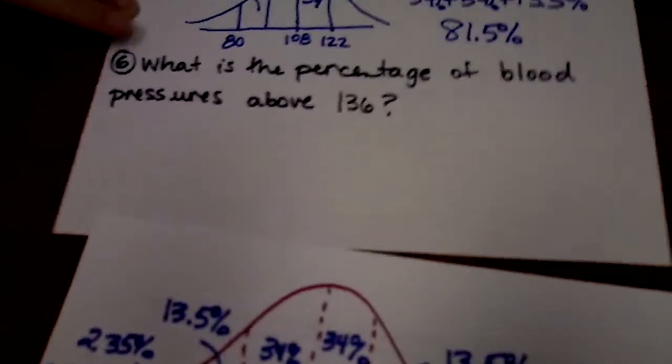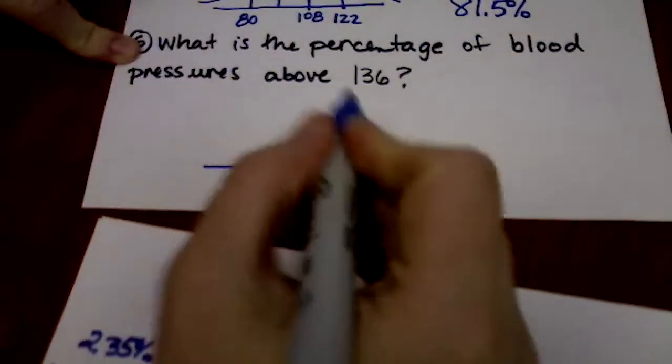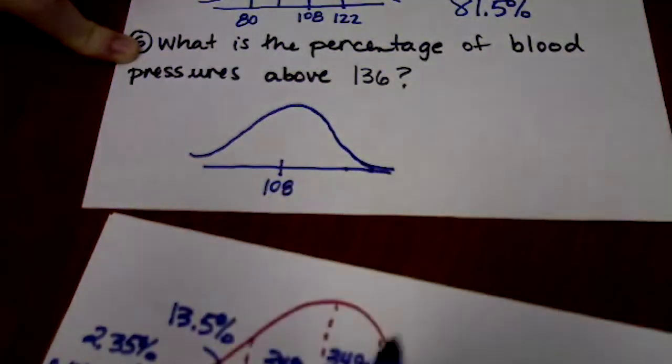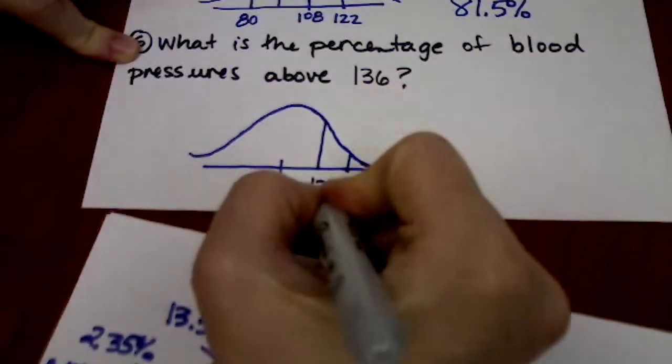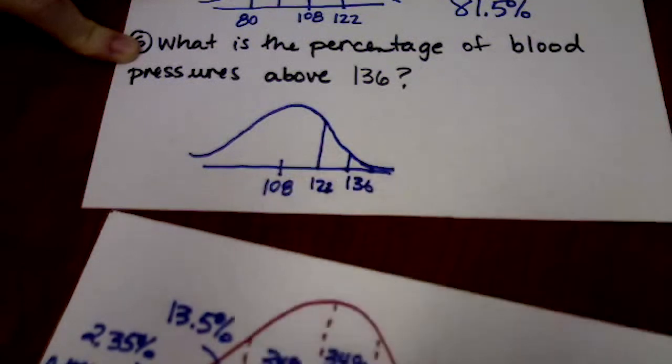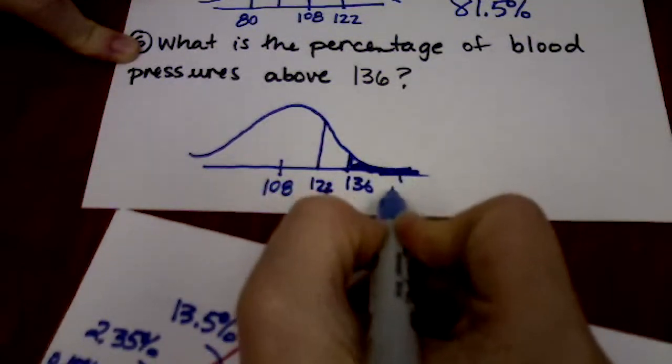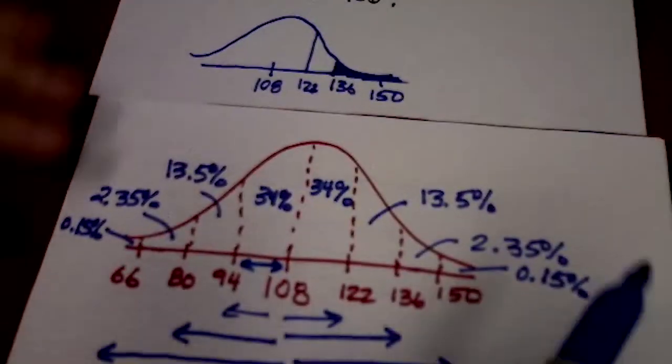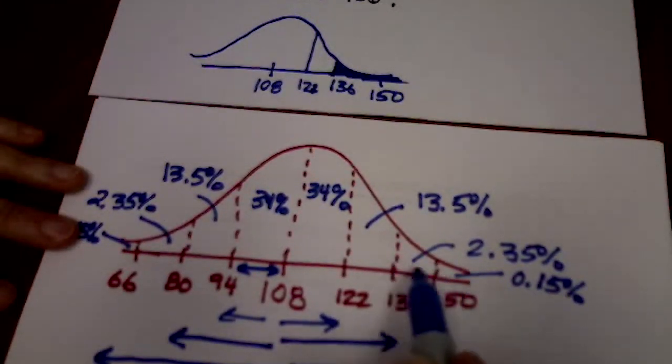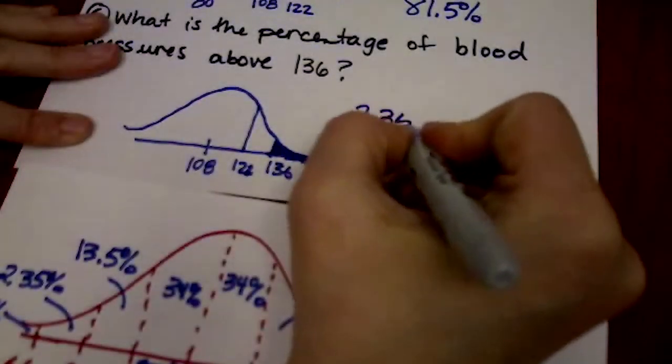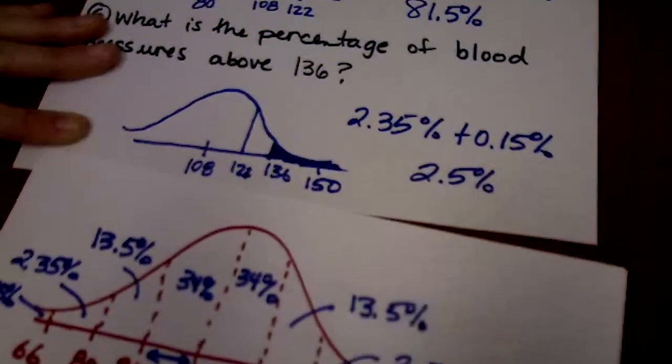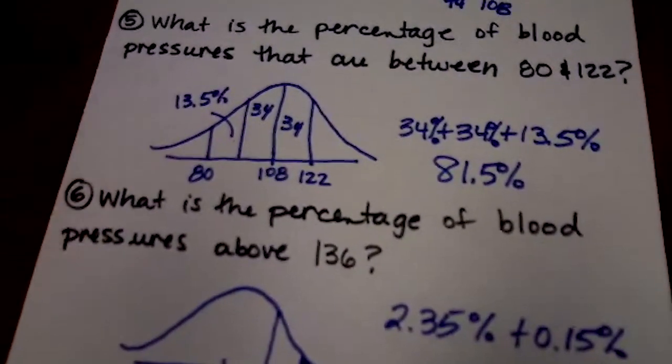It gets a little bit trickier when you don't just use standard deviations. What is the percentage of blood pressures that are between 80 and 122? I put 108 in the middle. 122 is my first standard deviation away. 80 is two standard deviations away. So I went one up and two down. I have three little sections. This one is 13.5, this one is 34, and this one is 34. If I simply add those three numbers, each one of these are percents, then I'll end up with 81.5%.